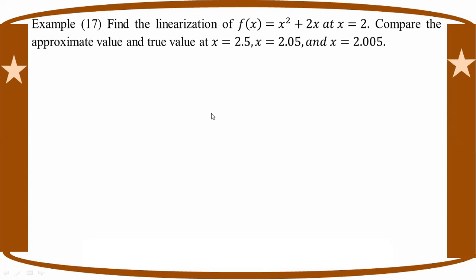Example 17: Find the linearization of f(x) equal to x squared plus 2x at x equal to 2. The linearization of f at a equals 2. We need to find f(2) and f'(x) to apply the linearization formula.